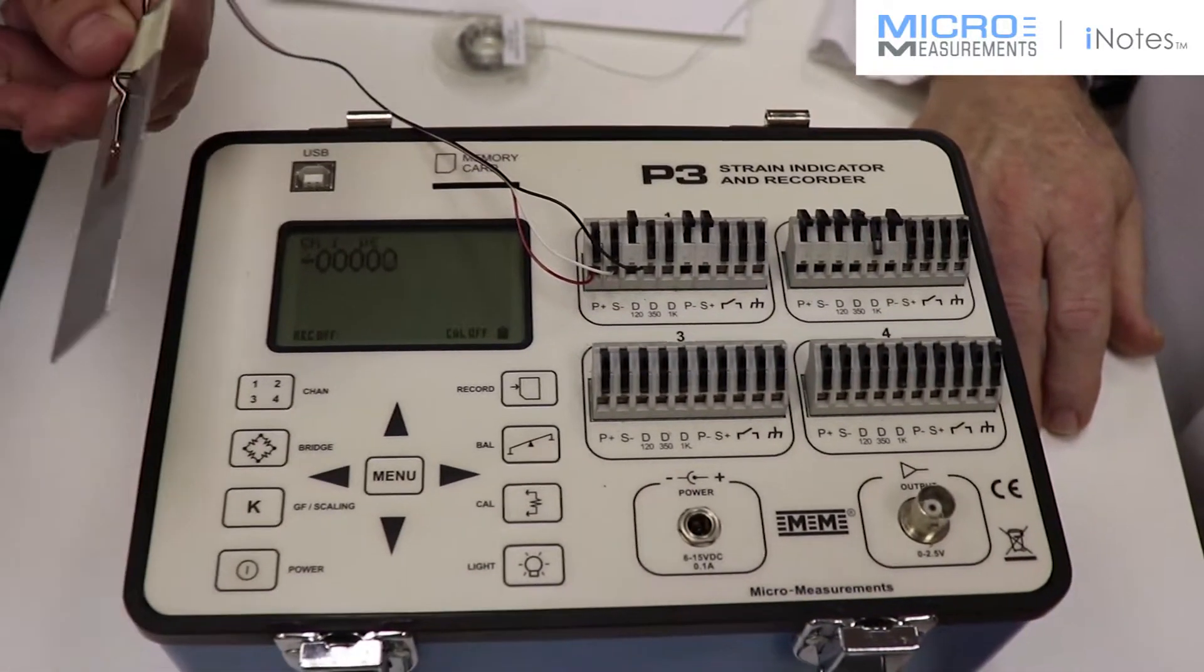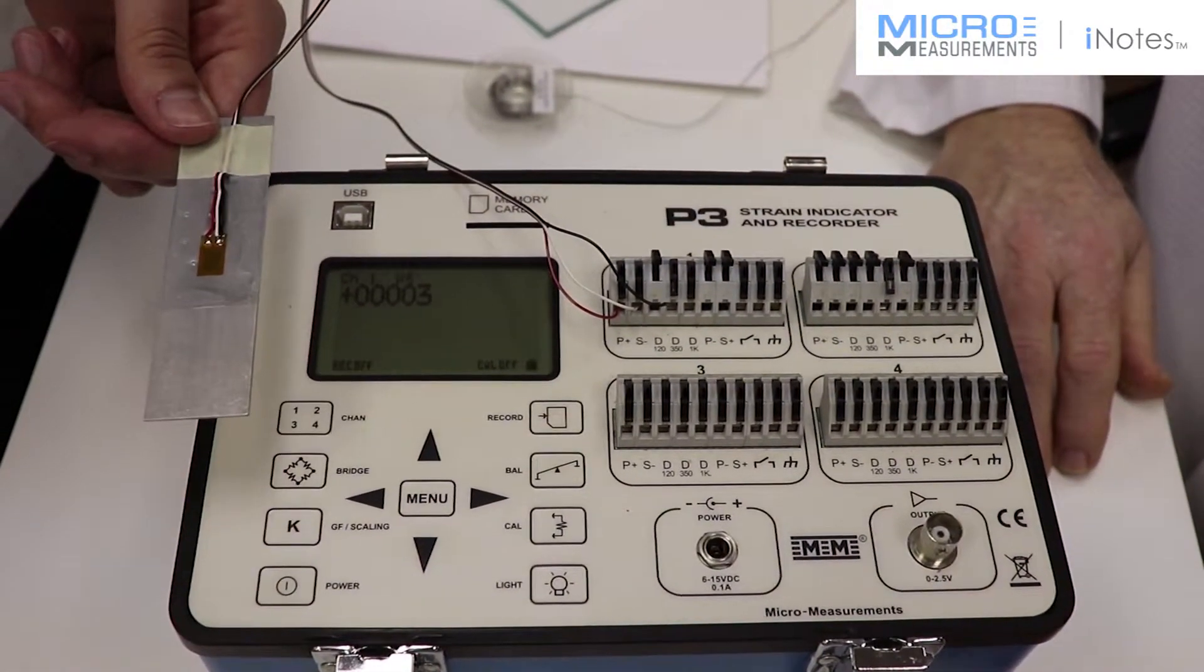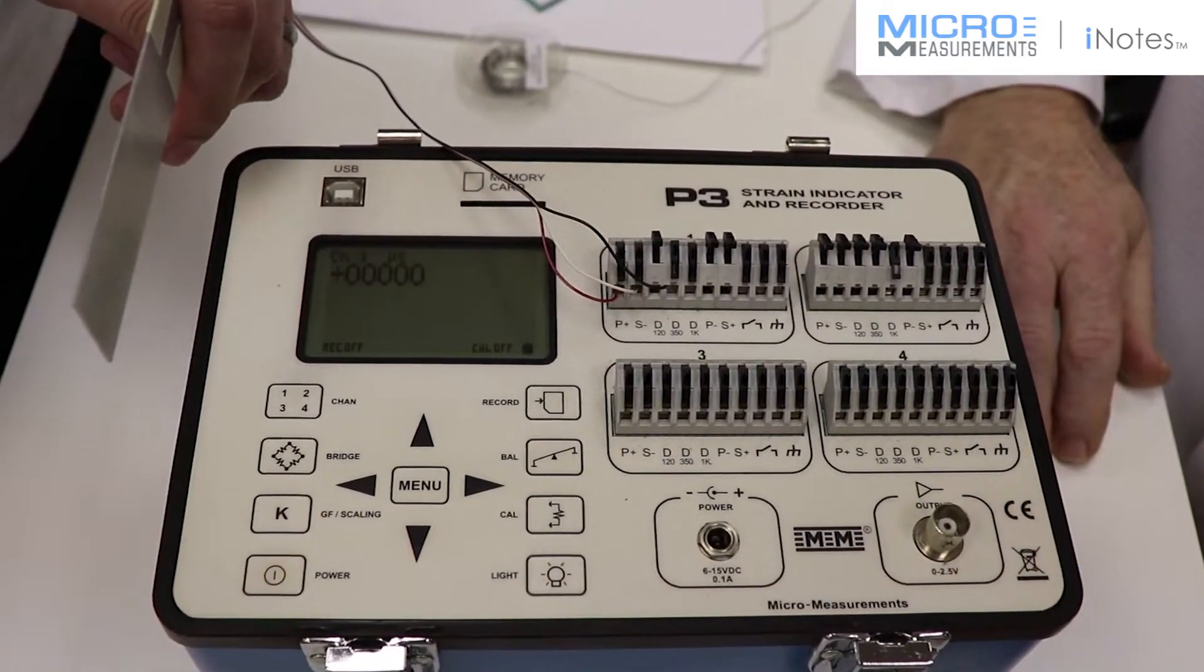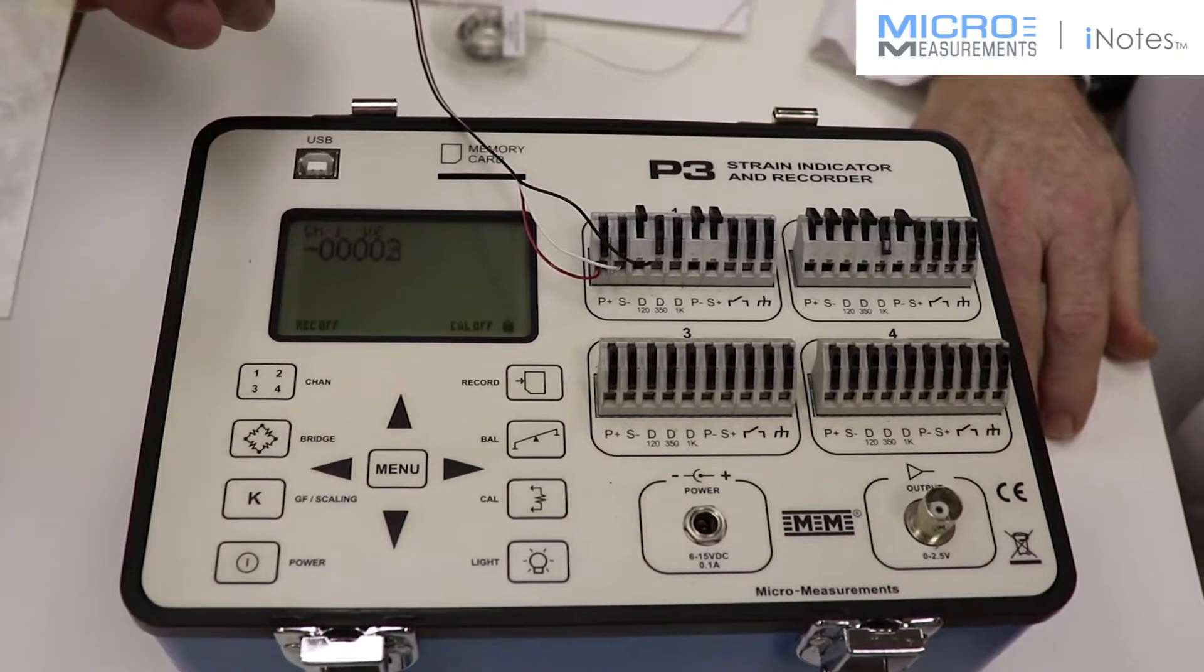Now Colin, if you'll turn it so we get bending, he goes to three microstrain. Go back to vertical, and it goes straight back.